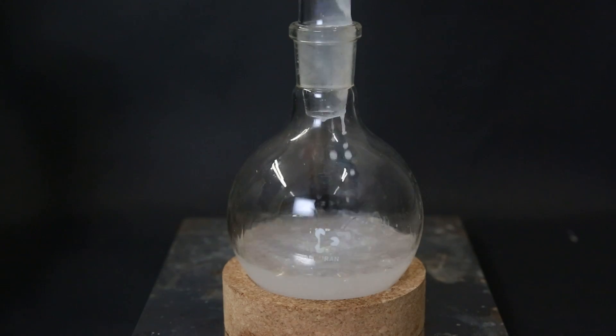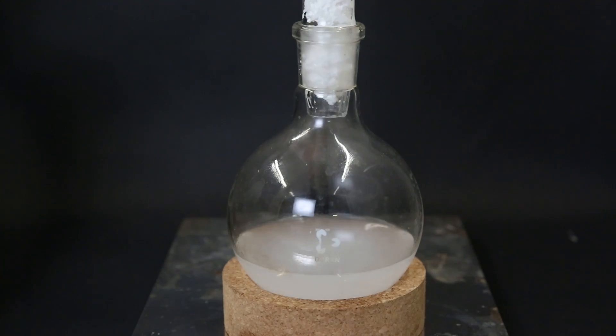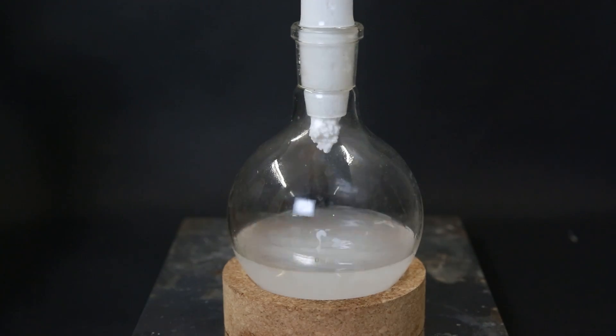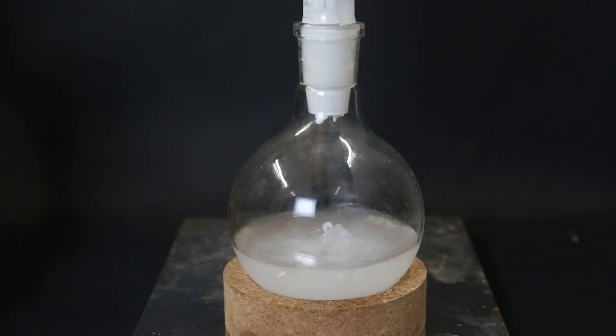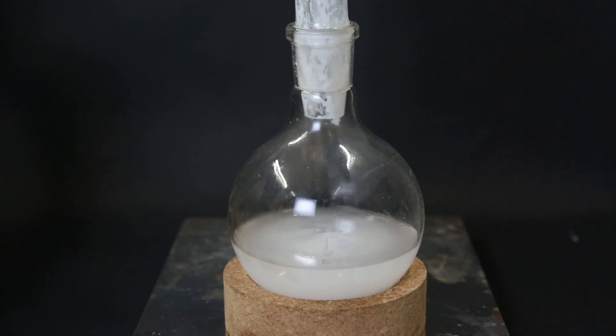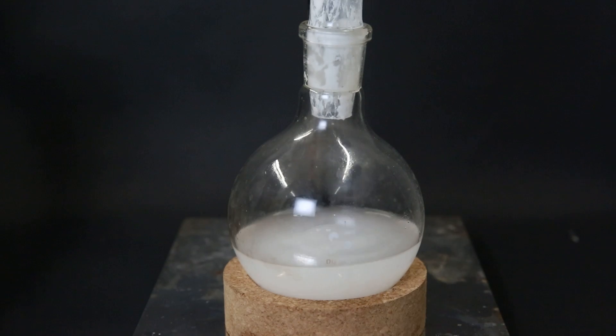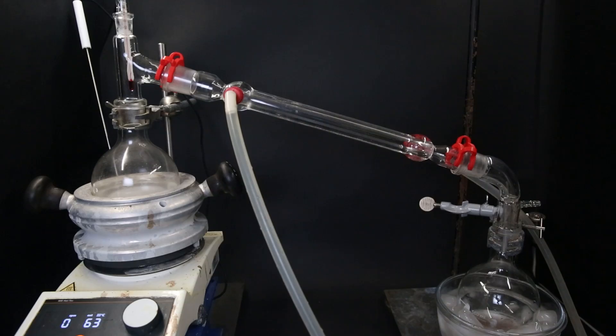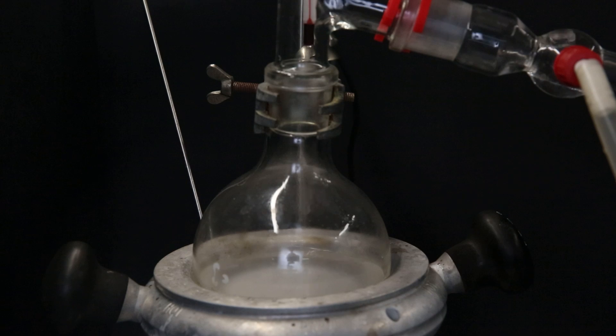I transfer all of the contents to a flask, including the calcium chloride. Since the boiling point of diethyl ether is so low, I can keep the calcium chloride in the flask while distilling without having to worry about the water coming over. So I set it up for a regular distillation and I don't have to add in a stir bar since the calcium chloride beads work nicely as boiling chips.